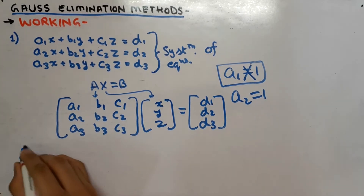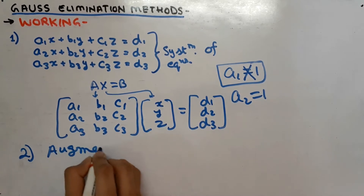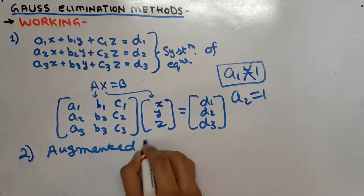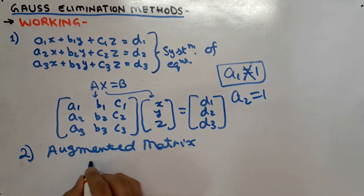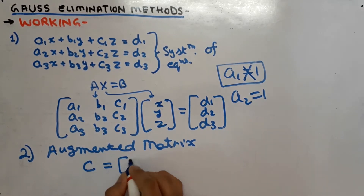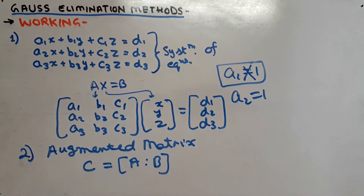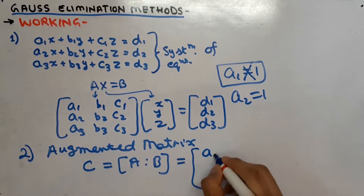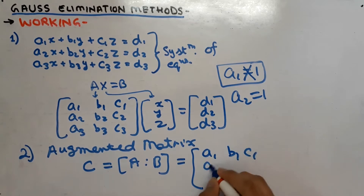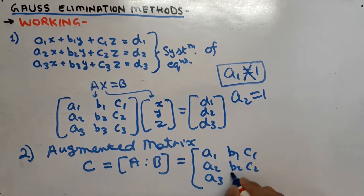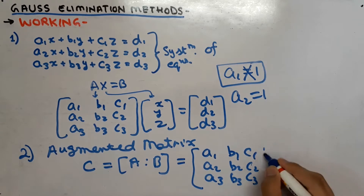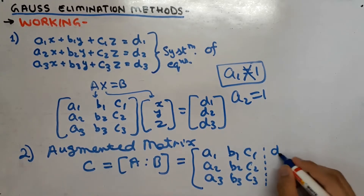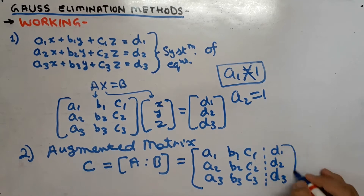Our second step is to write an augmented matrix. The augmented matrix is represented as [A : B] — a combination of matrix A and matrix B separated by a dotted line. That is: a1 b1 c1, a2 b2 c2, a3 b3 c3, with matrix B values d1, d2, d3. This is our augmented matrix C.